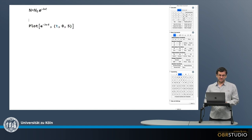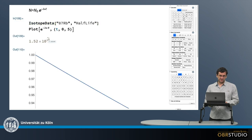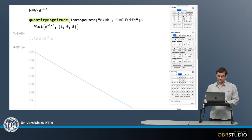And then I need to define the lambda. I can use a database here to get the half-life of, for example, rubidium-87. So I put in here half-life and then I get the half-life, but in seconds, which I don't want.